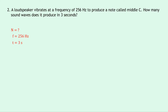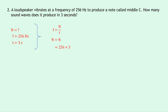There's no prefixes used there so we don't need to do any conversions. Writing down our equation relating these variables, F equals N over T. So if we rearrange for N we can multiply by T on both sides to get rid of that T from the denominator, and that gives us N equals F times T. Substituting in our numbers we get 256 times 3, which gives an answer of 768. You could put waves after that if you wanted to, but remember N has no units.